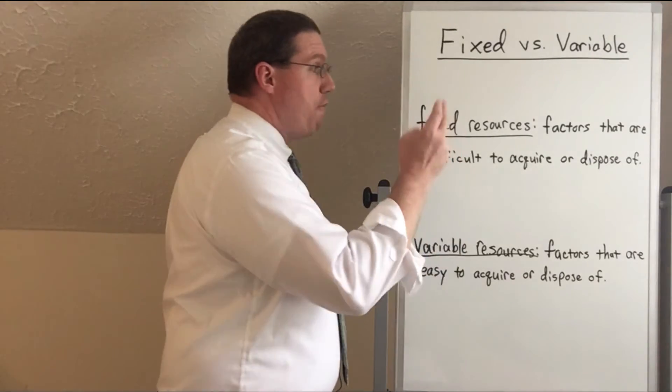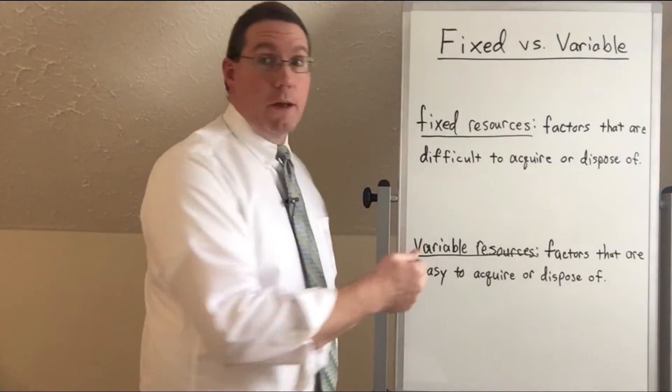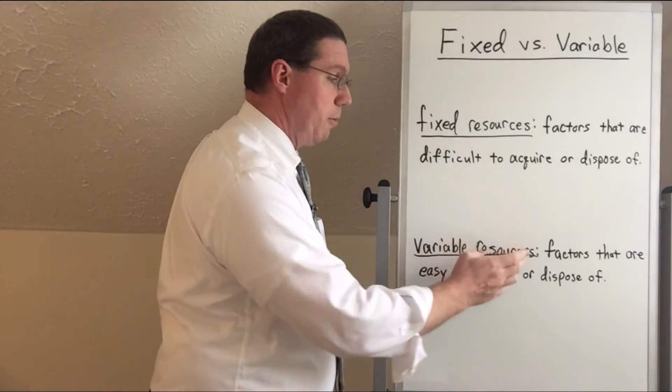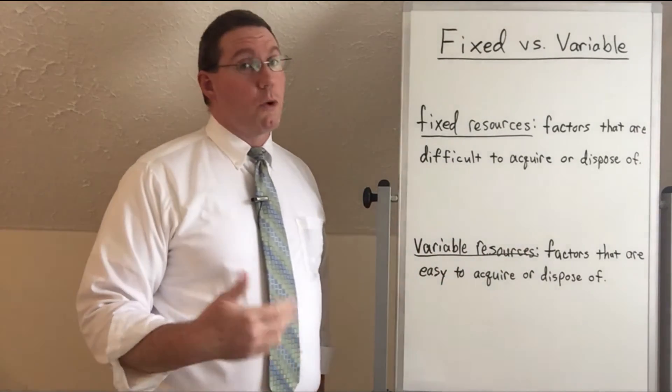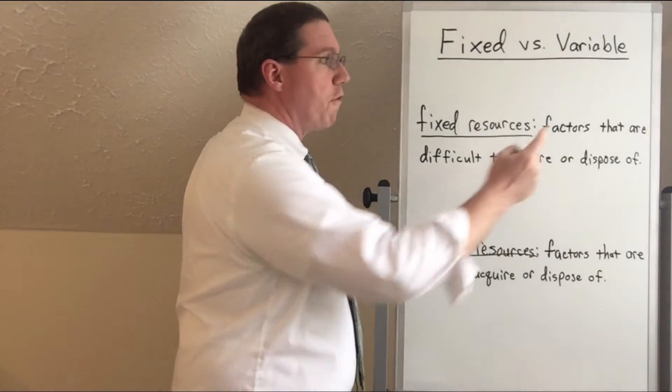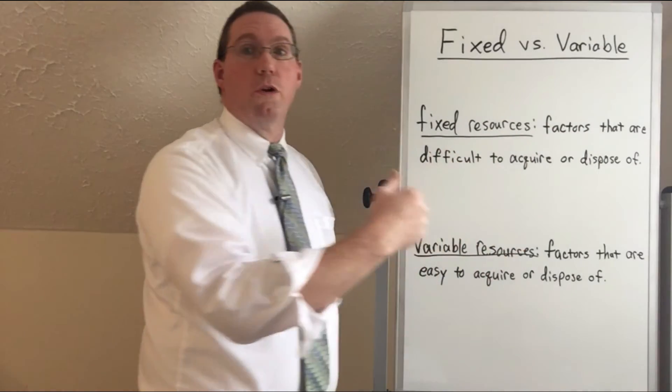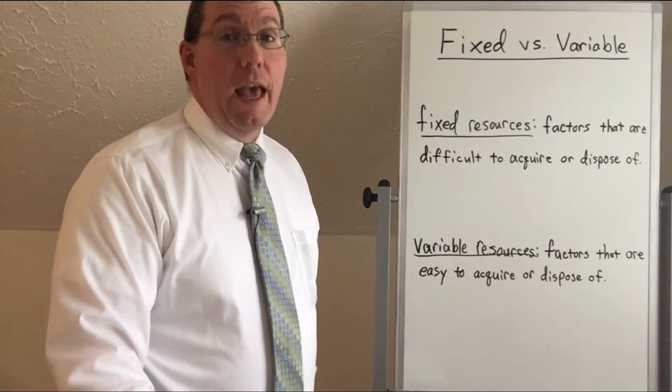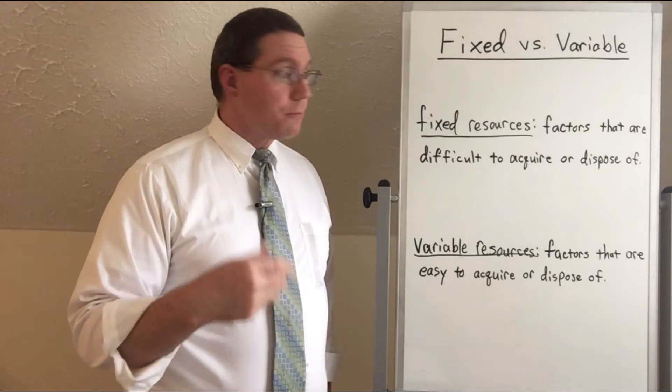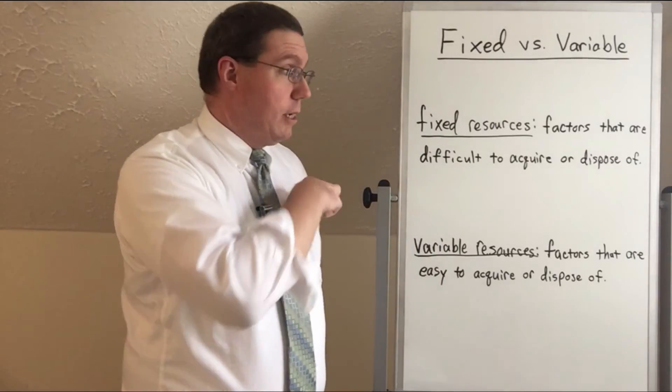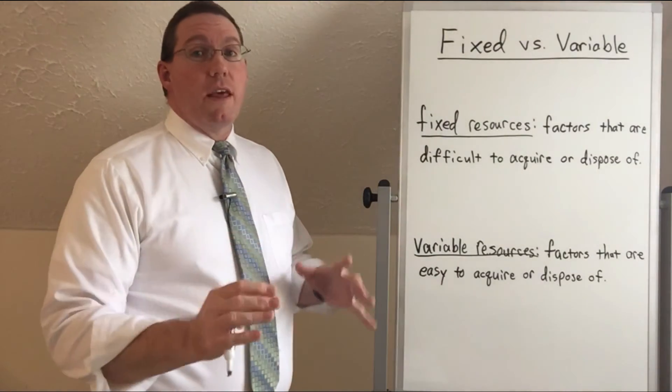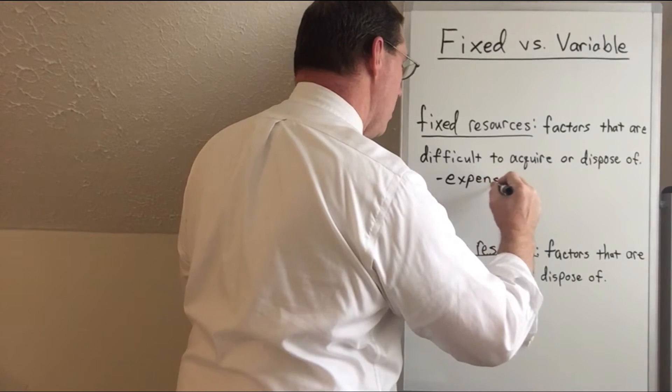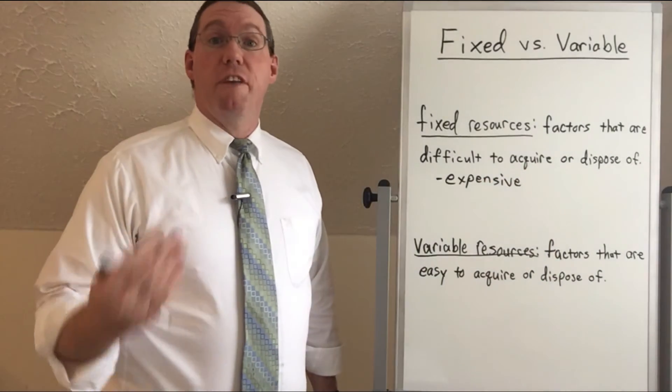But an easier way to say it is that some of them are fixed resources and some of them are variable resources. Well, in a business or even in a household, fixed resources, those are factors that are difficult to acquire or dispose of. These are things that are not easy to get and they're not easy to get rid of. And there's three main reasons why something will either be fixed or variable. And in a business, three of the qualities, three things that would make something fixed is, first of all, if it's expensive. So expensive resources are fixed because they are difficult to acquire.